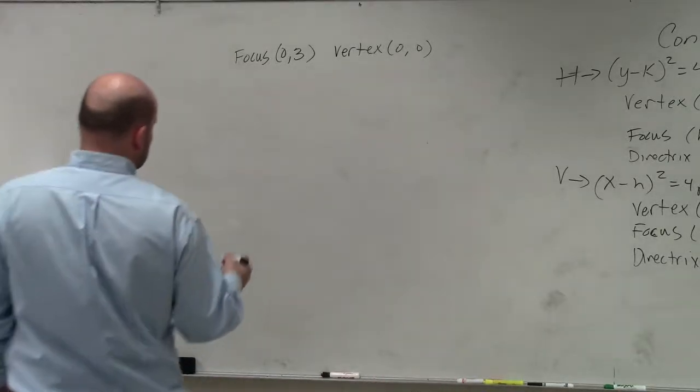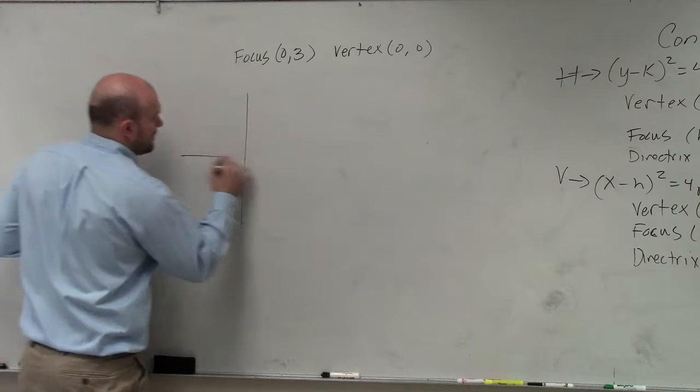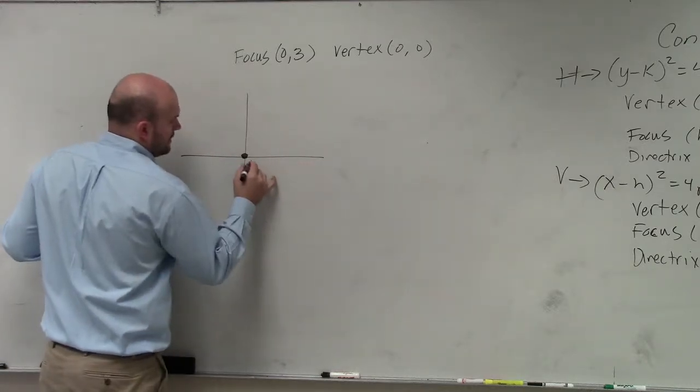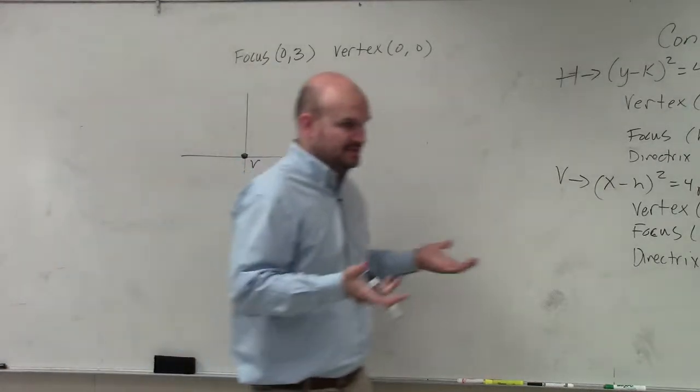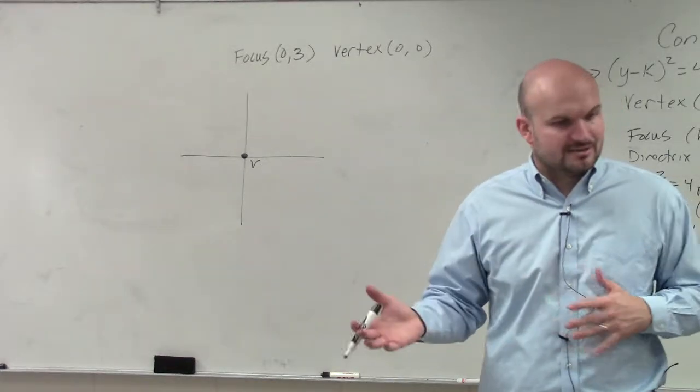So we know that the vertex is at 0, 0. I'm going to plot it and I'm going to label it. Because if I don't label it, what happens? You forget, right?